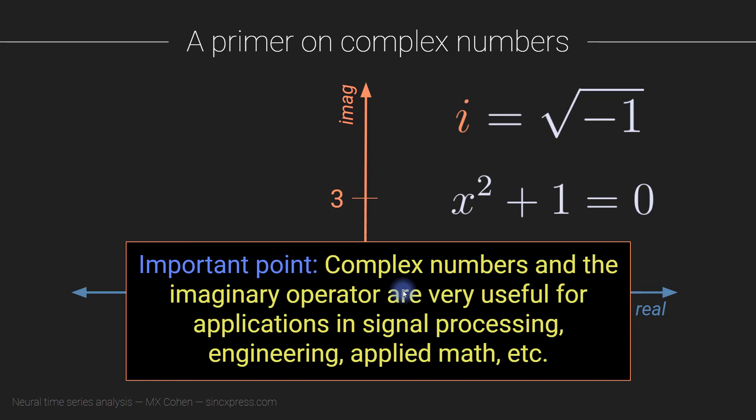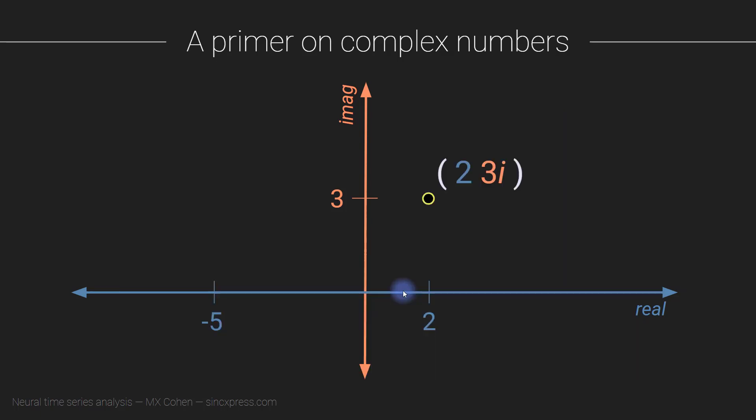So why are complex numbers so useful? Well, complex numbers are so useful because they contain a lot of information. In fact, they contain a lot more information than is just present in real numbers. So for example, with real numbers, all we have is kind of two pieces of information. We have the magnitude, which is like the distance away from the origin. And then we have the sign, which is negative or positive or zero. But complex numbers contain a lot more information.